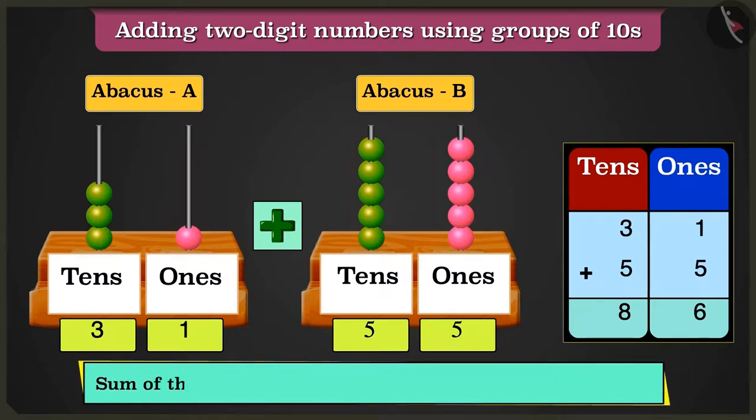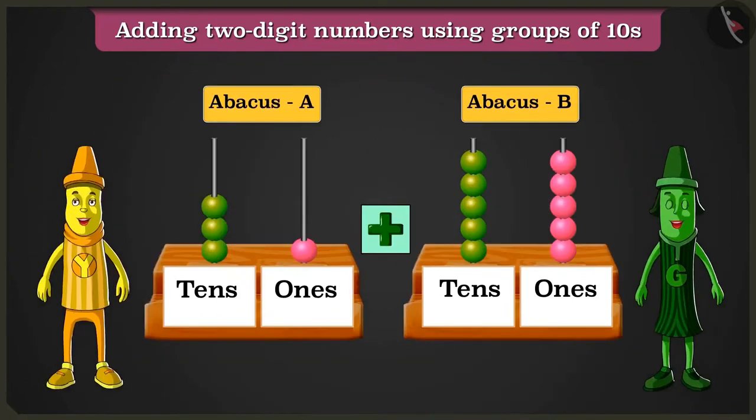So abacus A and abacus B added together will give us the number 86. Oh wow, well done, Greeny. Thank you, Yellow.